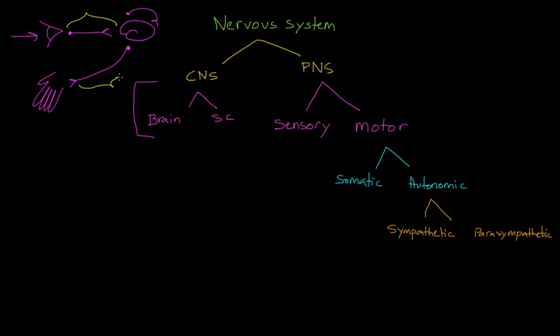But then we also have this neuron right here that is going from the central nervous system, from the brain or the spinal cord, to our hands so that we can act upon something. And this is what we would refer to as a motor neuron.